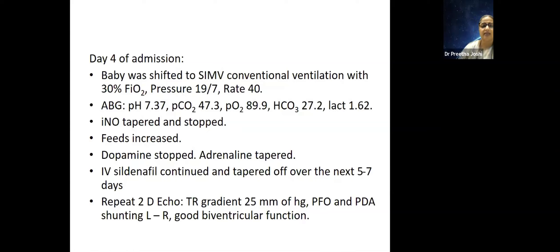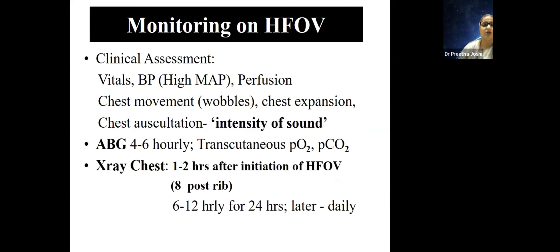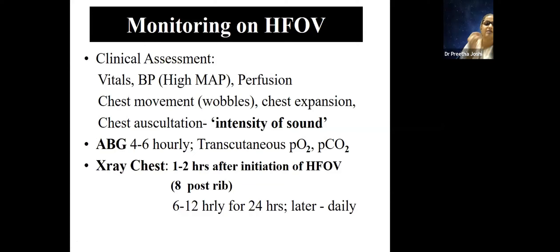For monitoring on HFOV: watch vitals and perfusion constantly because intrathoracic pressure is elevated, venous return may drop, and the child may need fluids or inotropes. Watch chest movements — if you lose wobbles and start seeing the child breathing, there is likely airway obstruction in the ET tube or lower trachea and bronchi. These children need good suction. Closed suction can be used but sometimes plugs don't get removed, so open suction is occasionally needed.